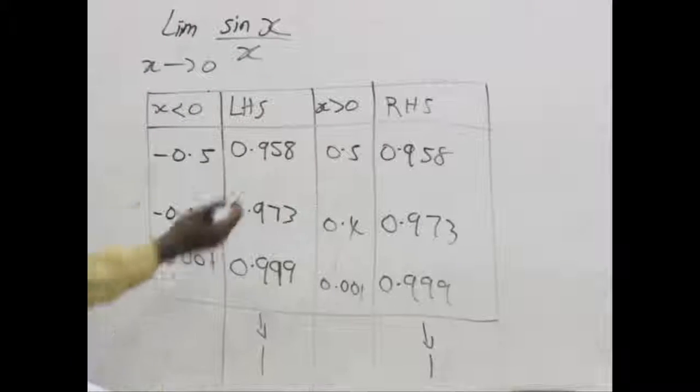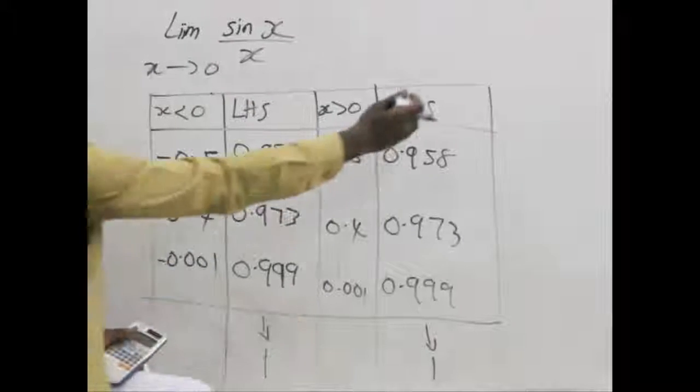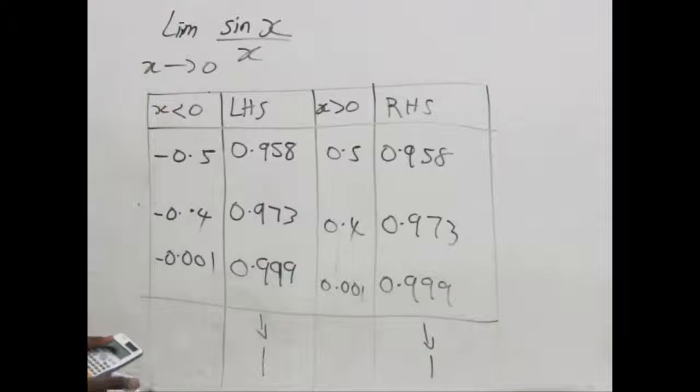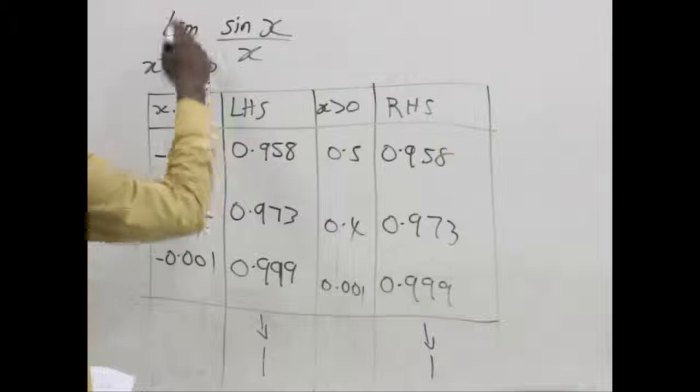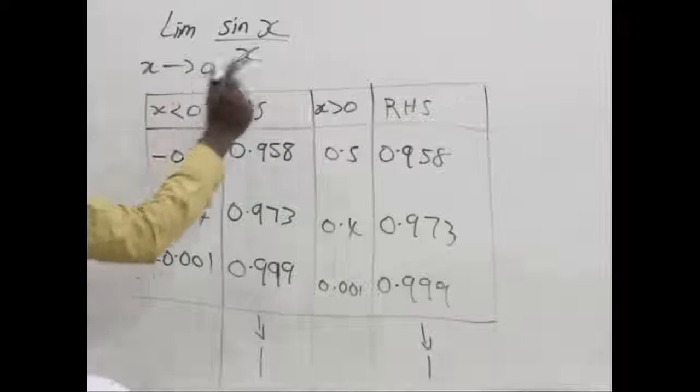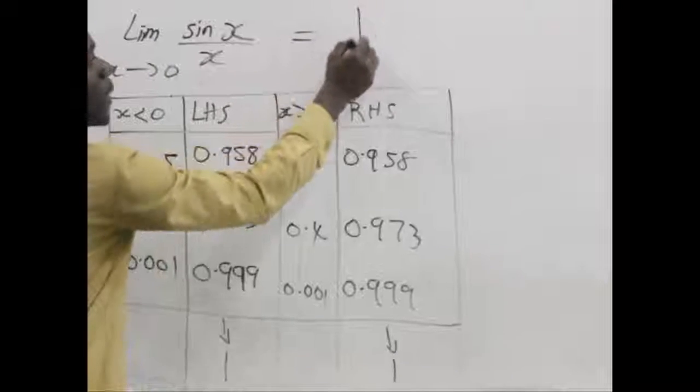We can say that the left hand side limit exists, the right hand side limit exists, and they are equal. Since they are equal, we can say the limit of sine x over x as x approaches 0 is equal to 1.